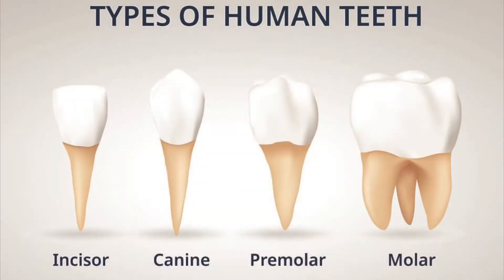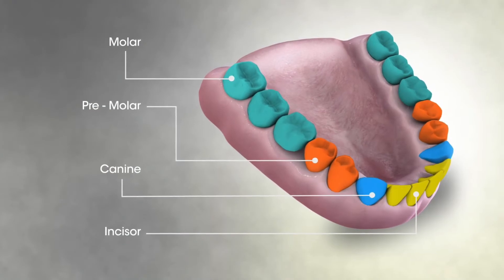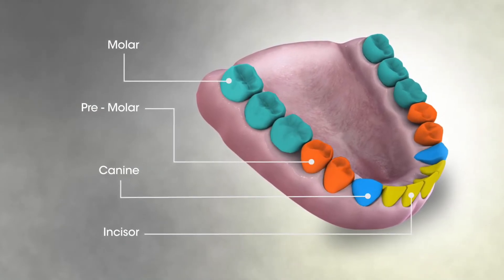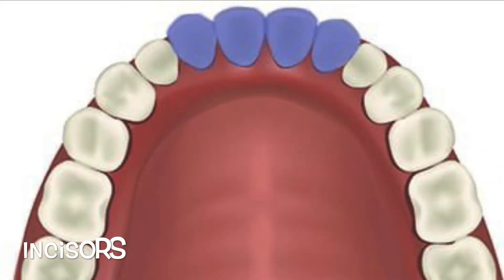We human beings have four types of teeth: the incisor, the canine, the premolar, and the molar. This is how our teeth are set in our jaws. The four front teeth in both the upper and lower jaws are called incisors. Their function is to cut food. There are eight of them — four upper and four lower.